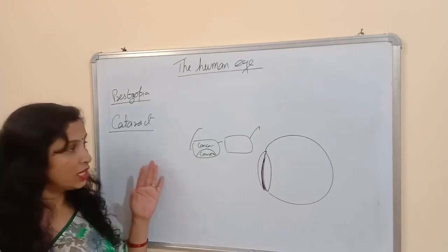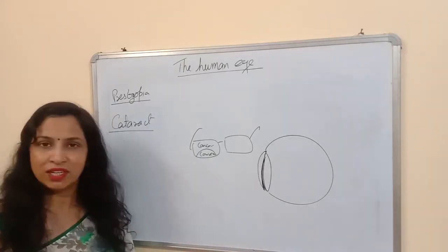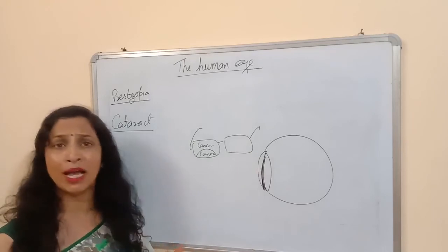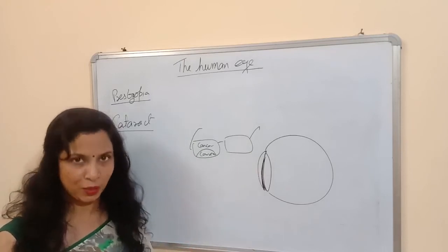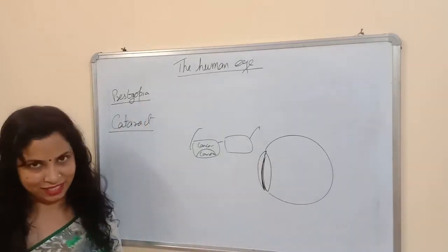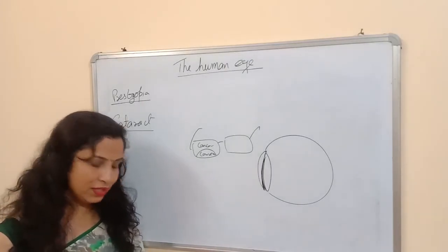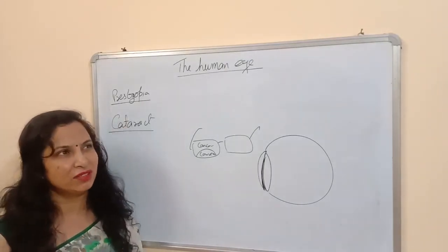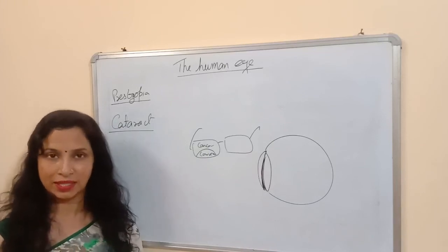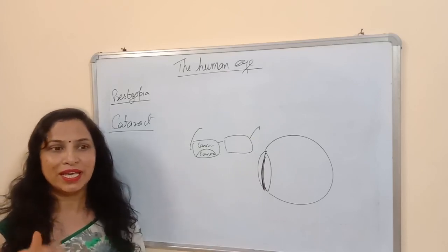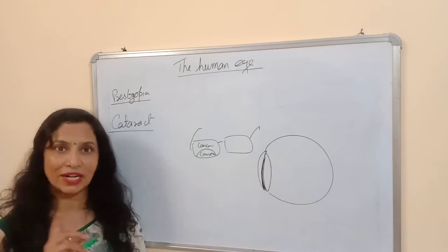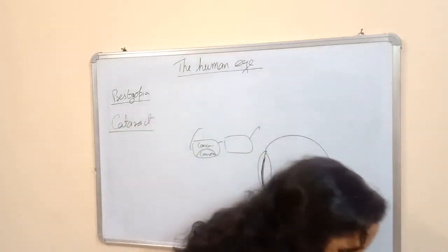Surgery is the only method for correction of cataract. So we have studied four defects of vision: myopia, hypermetropia, presbyopia — which is old-age hypermetropia — and cataract. One more defective vision in our syllabus is astigmatism, in which a person cannot identify horizontal and vertical lines. For correction, the doctor prescribes a cylindrical lens.